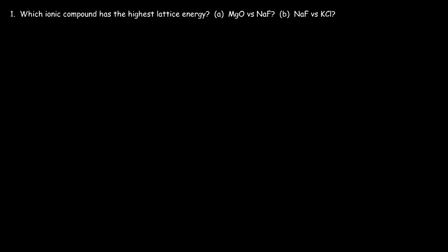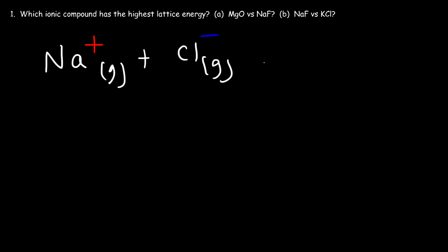Let's take sodium chloride as an example. If we have the sodium cation in its gaseous state reacting with the chloride ion, and together they're producing sodium chloride as a solid, the energy that is released in this reaction is known as the lattice energy.